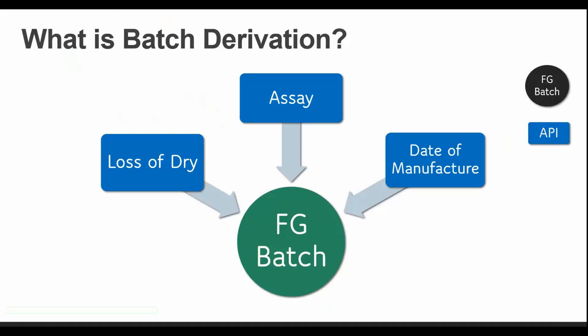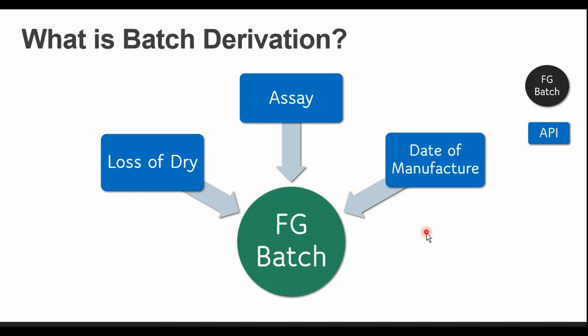Let's first try to understand what batch derivation is and how it actually helps in the typical pharma industry. The blue boxes you see here are basically the batch characteristics of the raw material or the active pharma ingredient (API), and the green circle here is basically the batch of the finished product. While manufacturing a finished product, you always want to copy the characteristics of a particular batch from the API material. Let's say we are using raw material RM1 and batch B1.